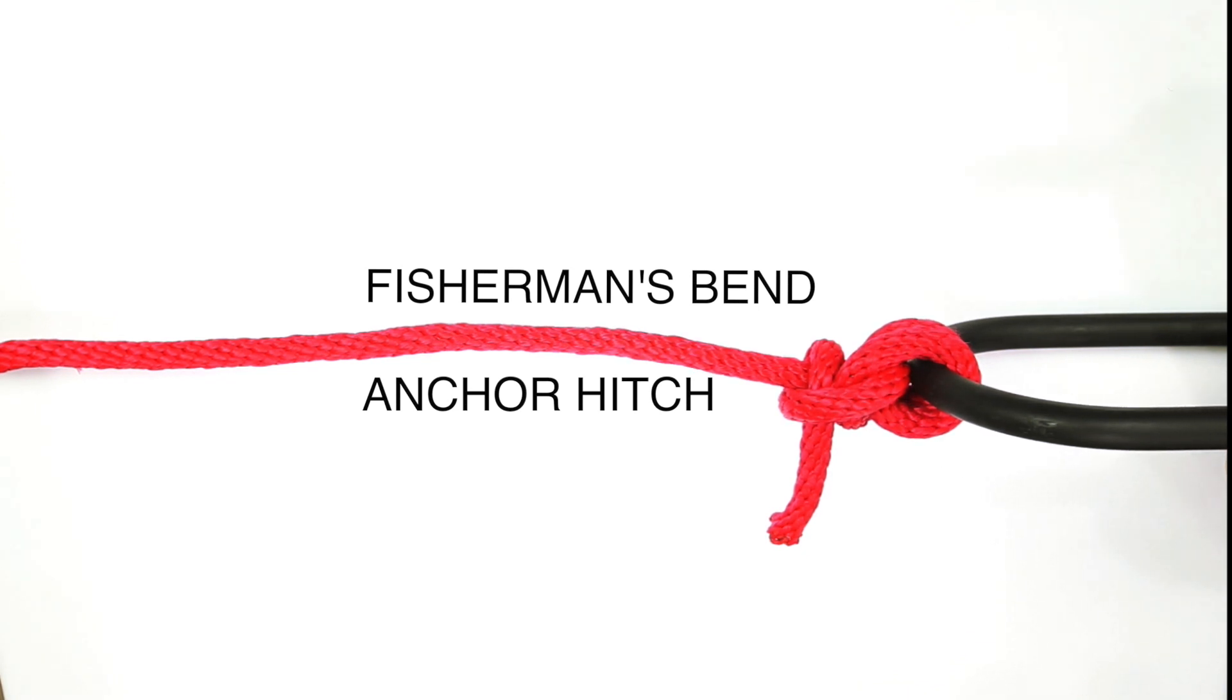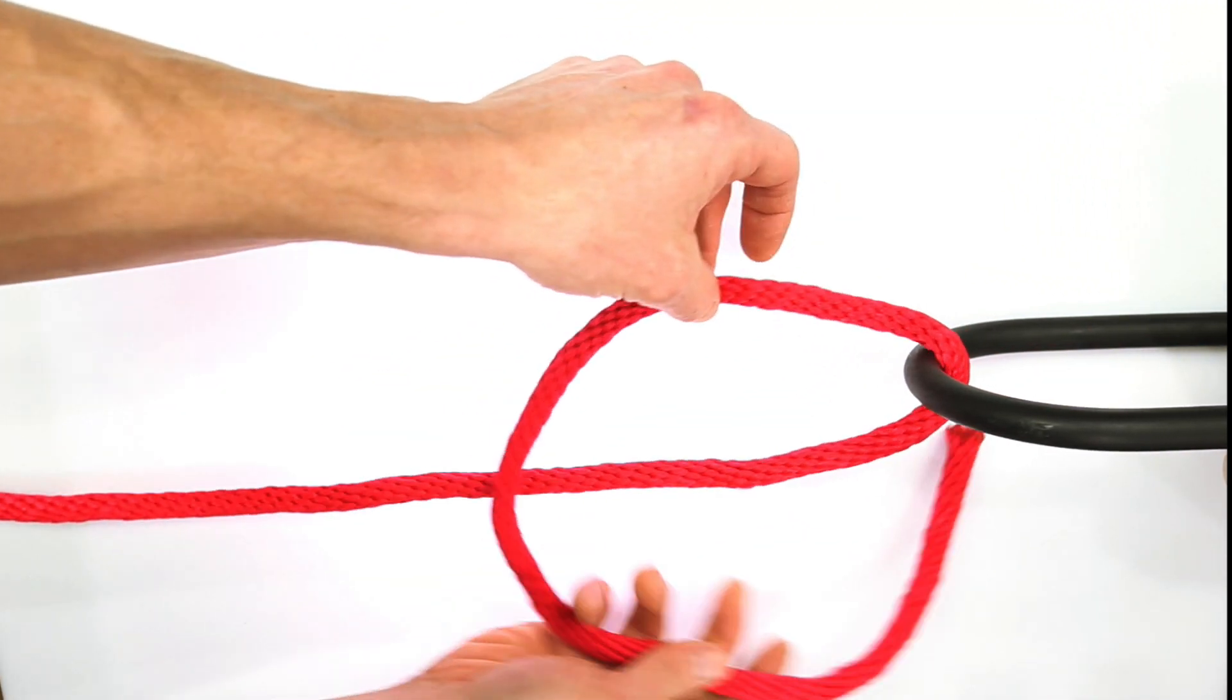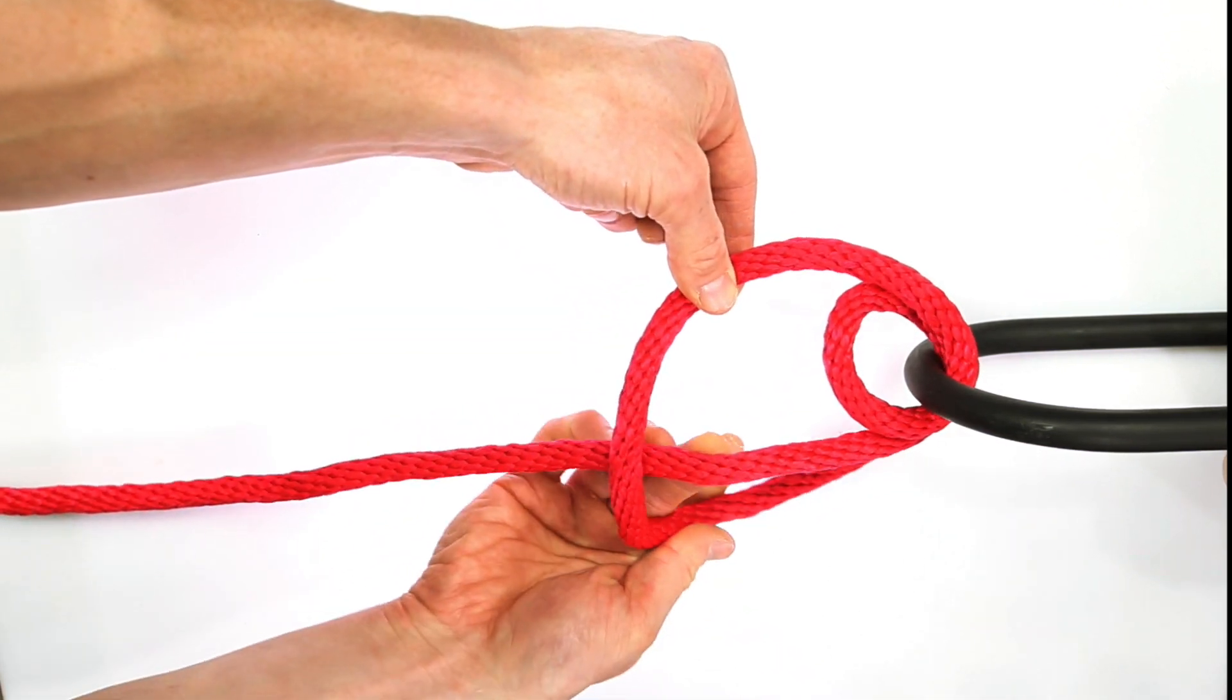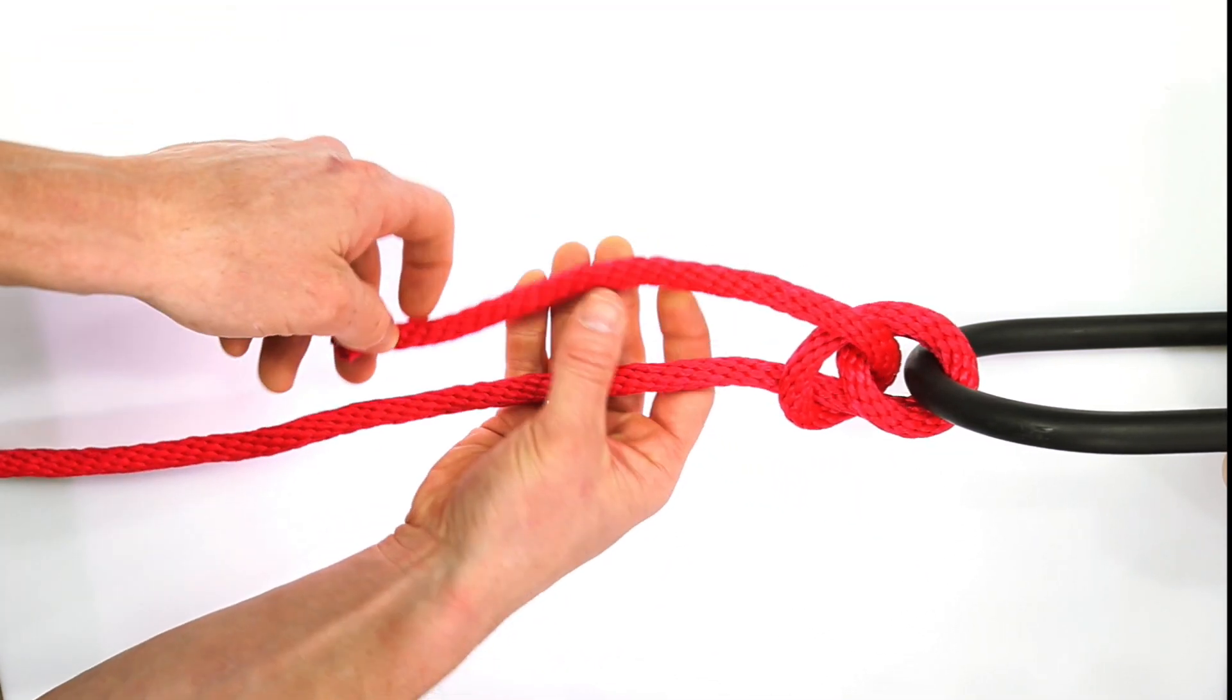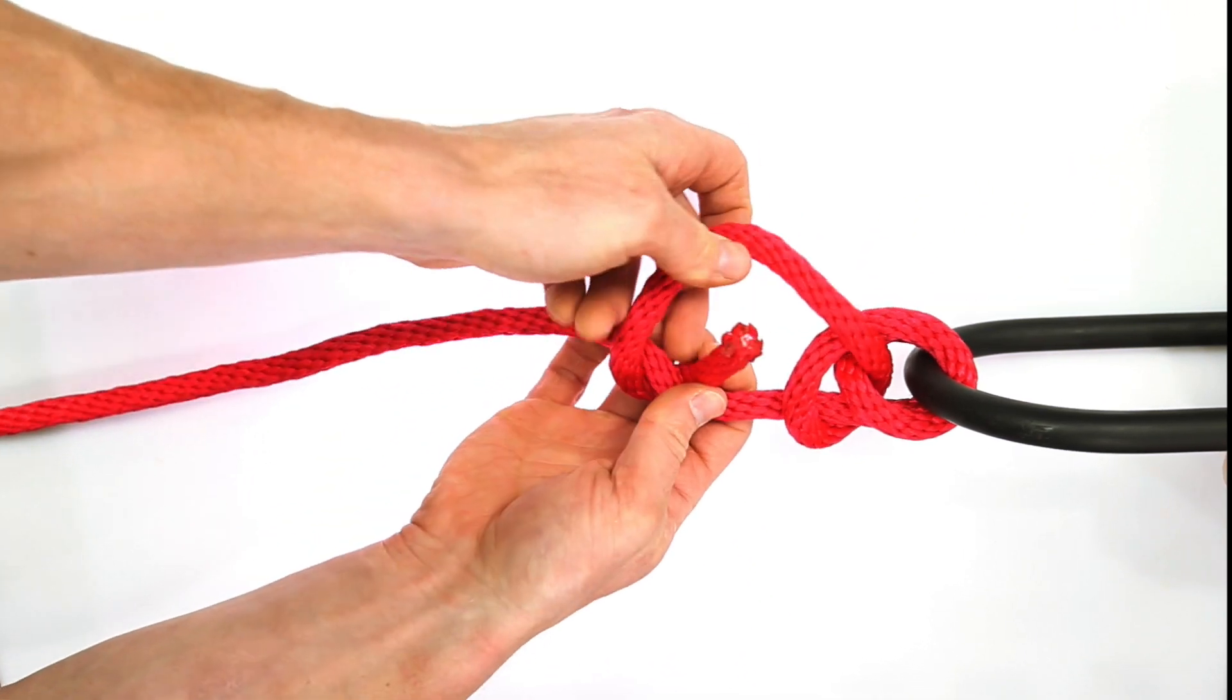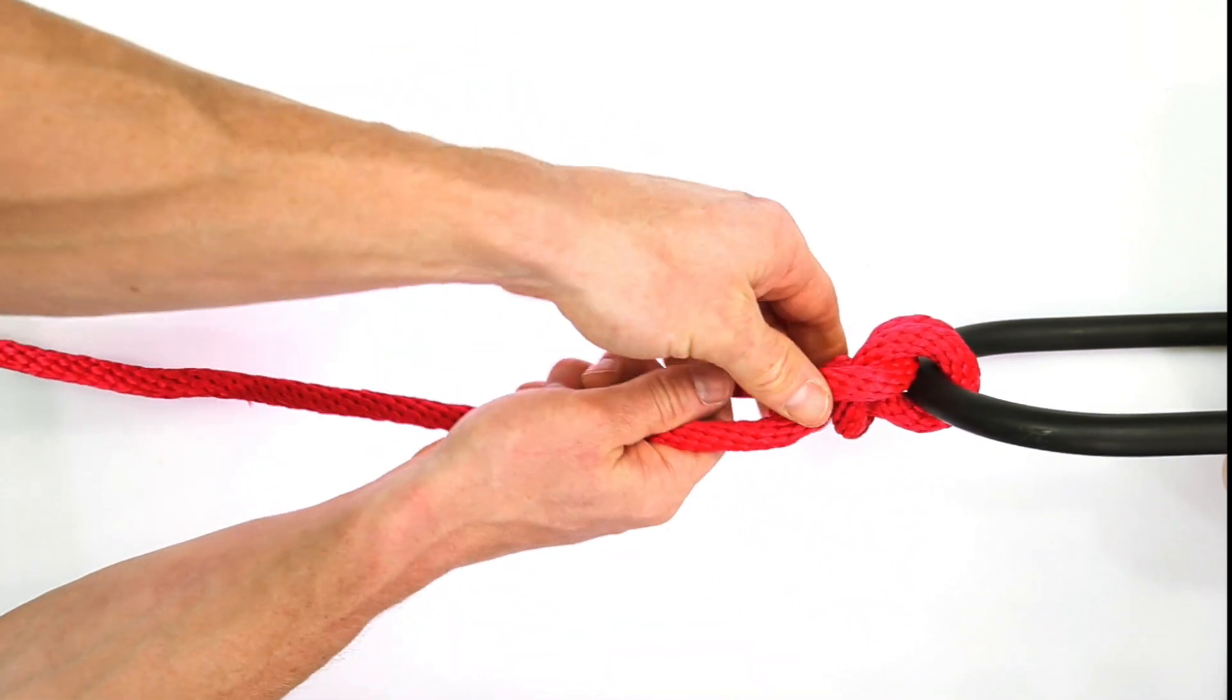First, go through the ring twice and make a loop like this. Then go over and around the rope and through the loop we just made. Tighten just a little and take your loose end over the rope a second time and around through here to lock on itself. There you have it, fisherman's bend.